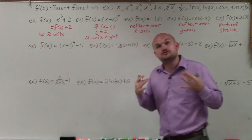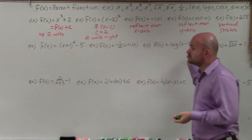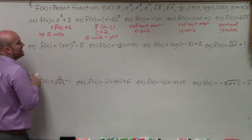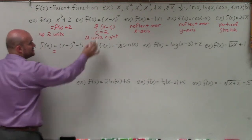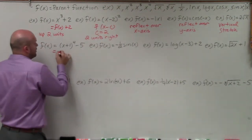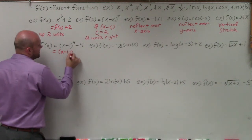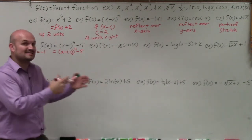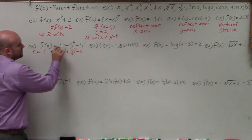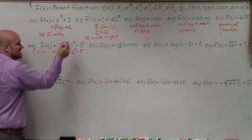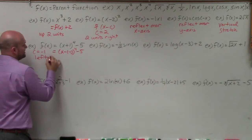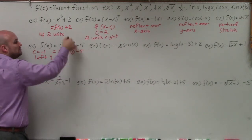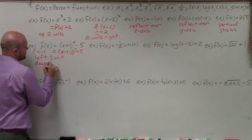Now in the next row, I have two operations going on. I have (x plus 1) to the fourth minus 5. The 1 is added on the inside. I can rewrite this as x minus negative 1, so c equals negative 1, which tells me to shift left. When you're adding inside the function and it's positive, the graph goes left. So the transformations are: left 1 unit, and since I'm subtracting 5 outside, down 5 units.